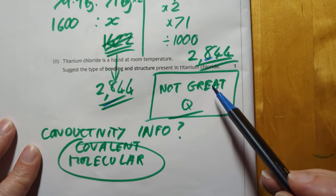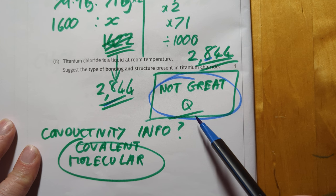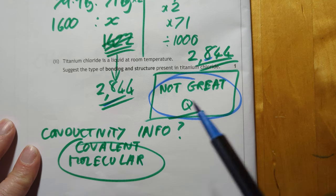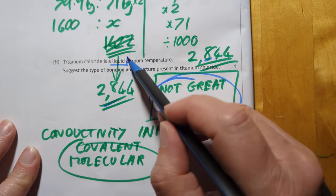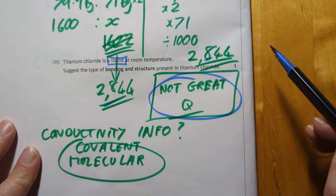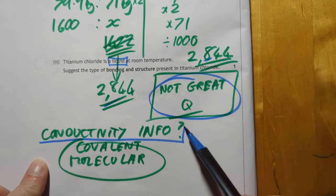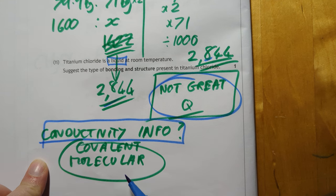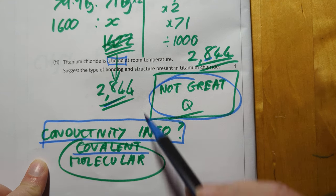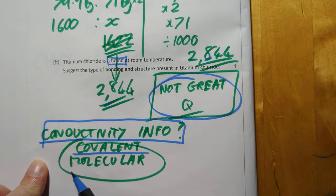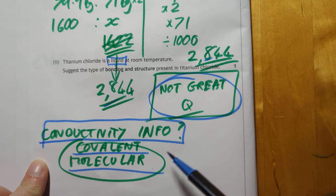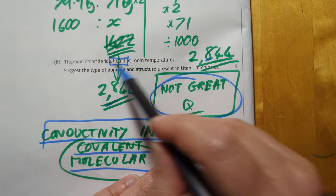This I did not think was a great question SQA, because all you've supplied, the only information you've supplied, is the fact it's a liquid at room temp now. I would have liked you to show me some conductivity information just to outline the fact that it's definitely covalent and the liquid improves it shows that it's molecular covalent. Not great. Is that the best you could do?